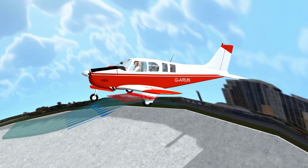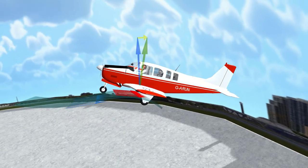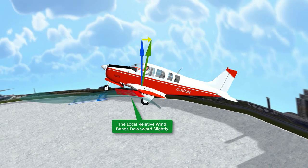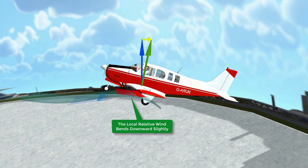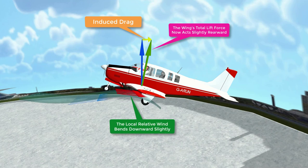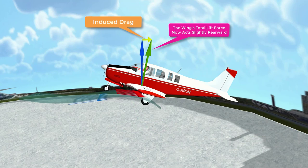Earlier, I said that lift is perpendicular to the relative wind — meaning the relative wind in the vicinity of the wing, as shown by the red arrows. As the angle of attack increased, the local relative wind bent downward slightly, which means that the wing's total lifting force is now acting slightly aft instead of vertically, as shown by the vertical green arrow. And when the wing's total lifting force pulls aft on the airplane, it induces a slight rearward pull in the direction of drag. Therefore, lift that acts like drag is known as induced drag, as shown by the yellow arrow.